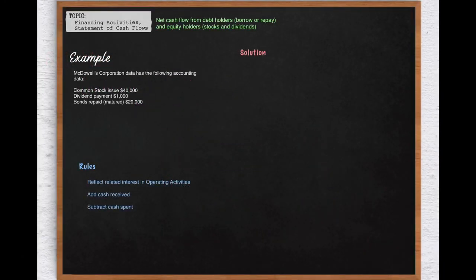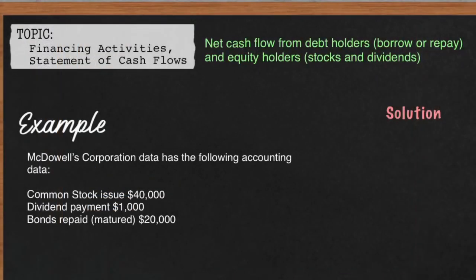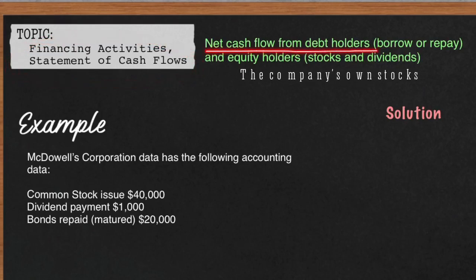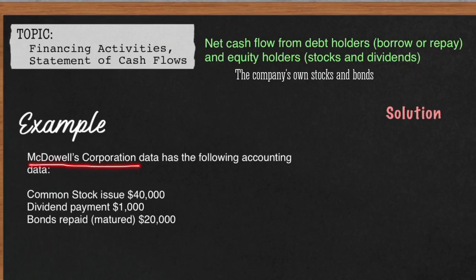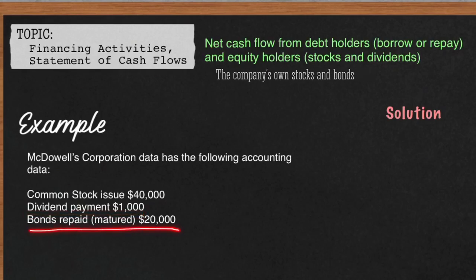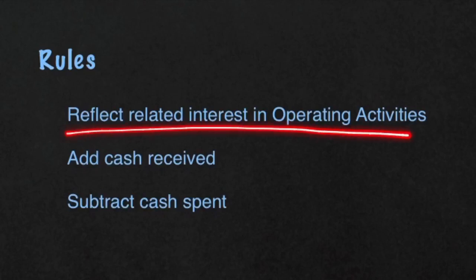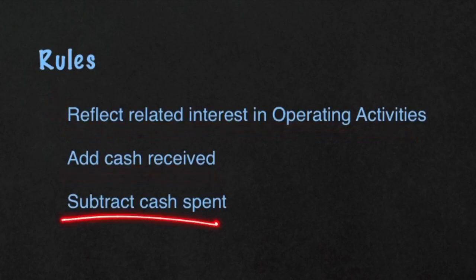Let's go over the very last section of the Statement of Cash Flows — that is the Financing Activities section. The Financing Activities section deals with the net cash flow from debt holders, where you borrow and repay cash, and equity holders, where you sell stock and pay dividends. For McDowell's Corporation, they had a common stock issue of $40,000, they paid dividends of $1,000, and they paid back bonds of $20,000. The rules are also pretty simple: add cash received and subtract cash spent. Note that related interest should be reflected in the Operating Activities section.